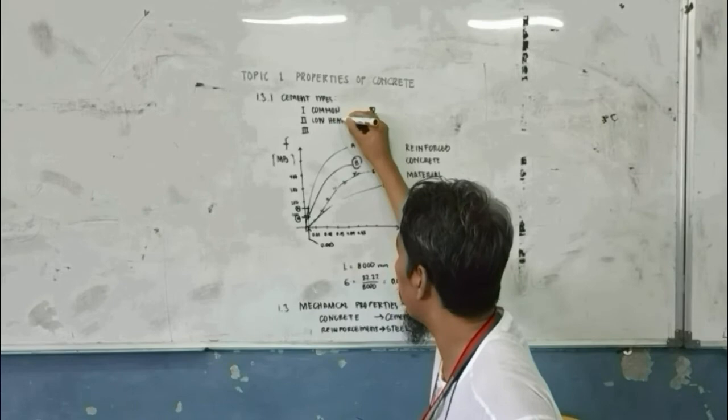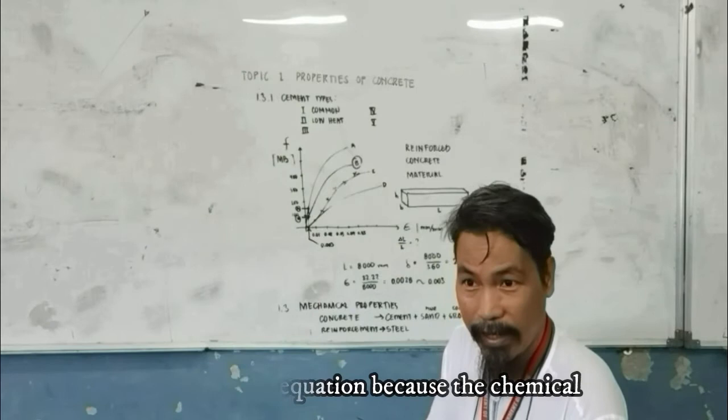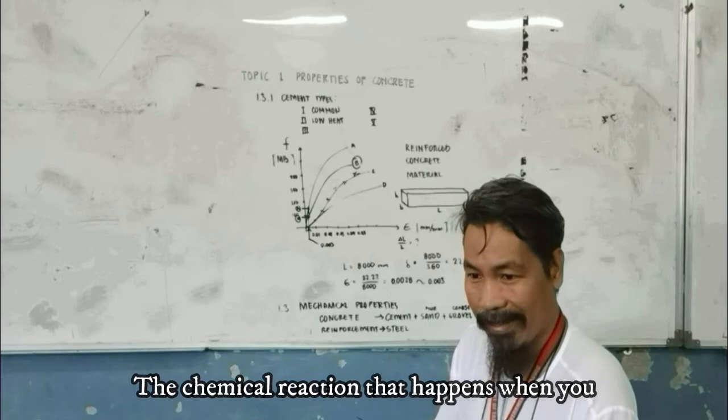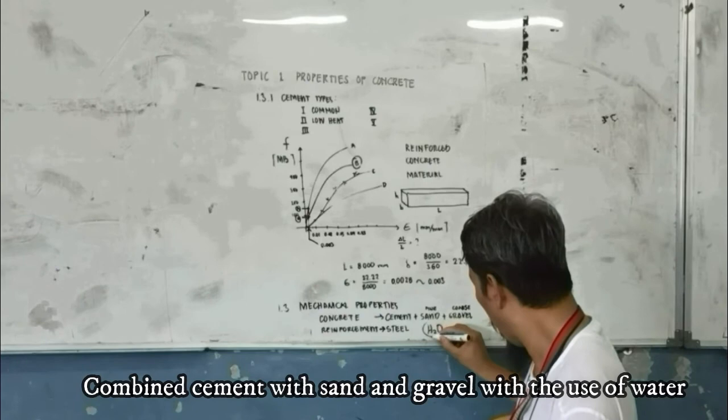What is called low heat. Low heat of what? Heat of hydration. It is the chemical reaction that happens when you combine cement with the use of water. Water.